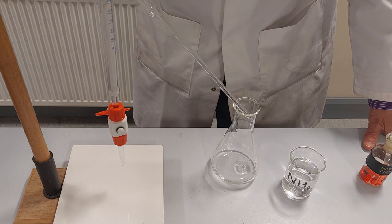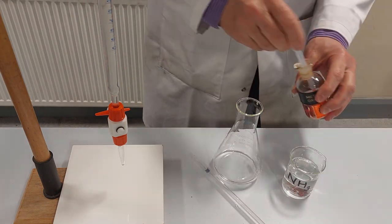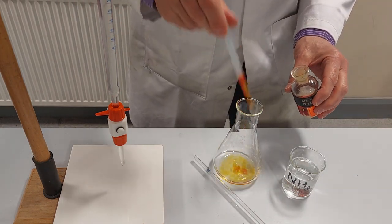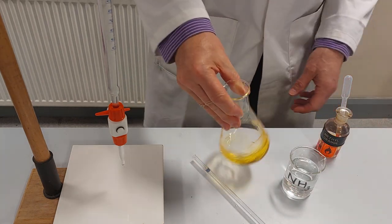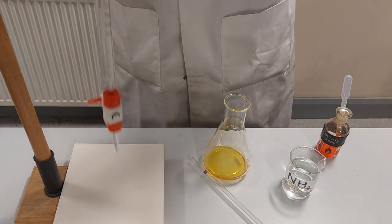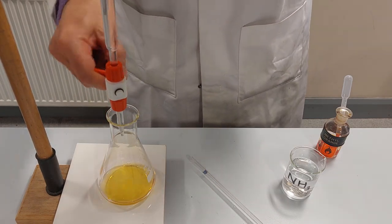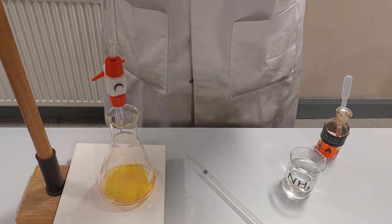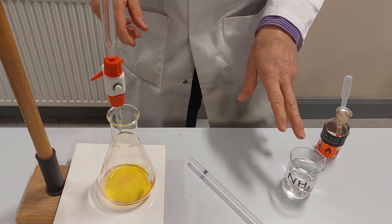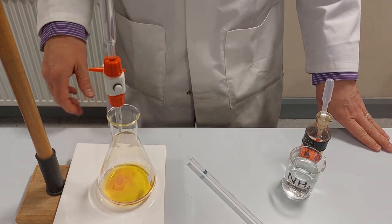So we run that all the way into the flask there and I'm going to add a little bit of indicator. The indicator I'm using today is methyl orange. That goes a nice orange color in a base and in an acid as you might have seen there it goes kind of pinky color.